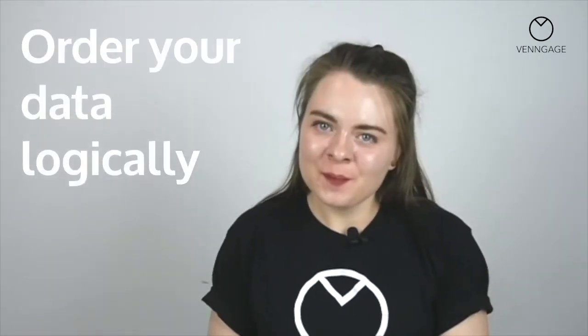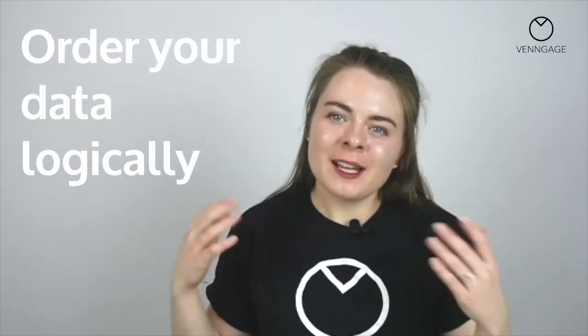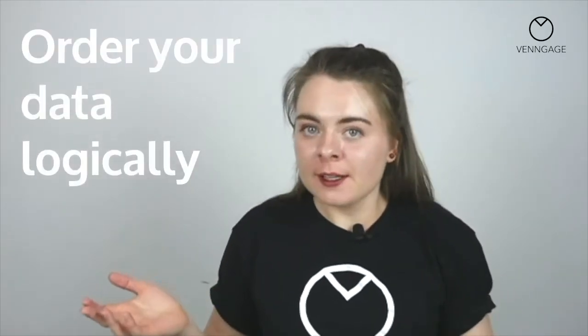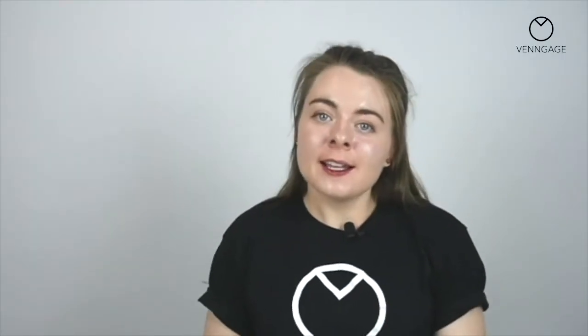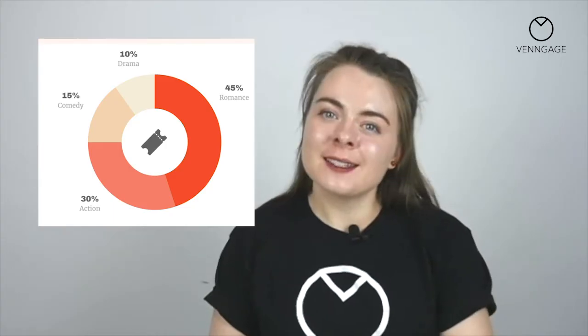The fifth tip is to order your data logically. This might sound simple, but it bears repeating. You should present your data in the order that your readers expect. So on a timeline infographic, you would want to make sure that your events are ordered from top to bottom or from left to right. And in a pie chart, you would want to make sure that your segments are ordered from biggest to smallest.